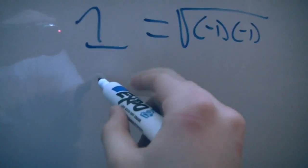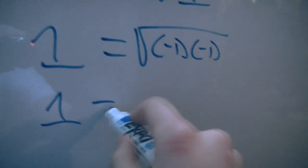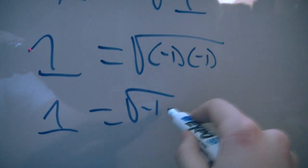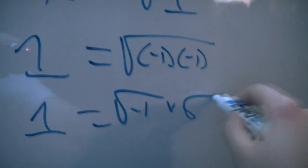After you get that, we're going to distribute this square root, so you're going to get 1 equals the square root of negative 1 times the square root of negative 1.